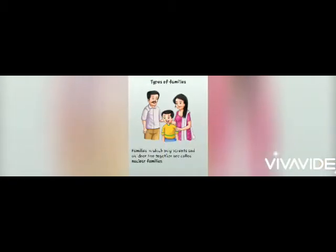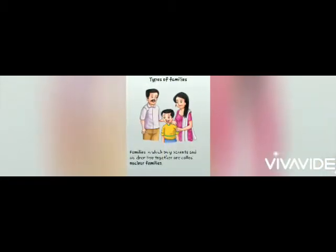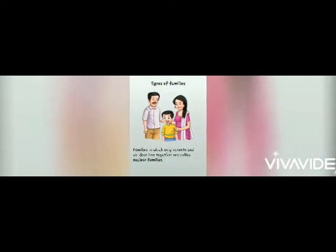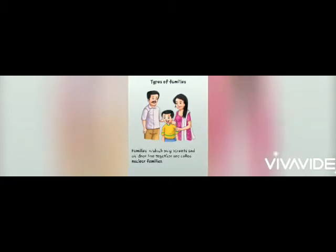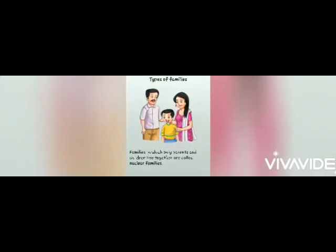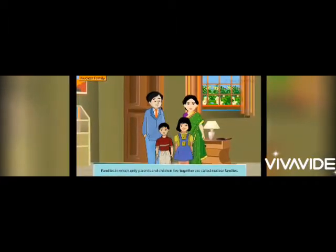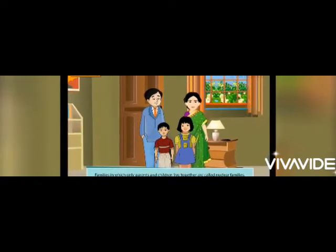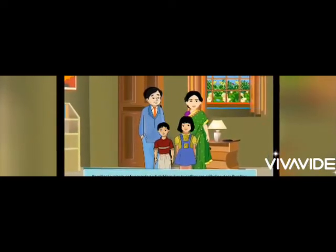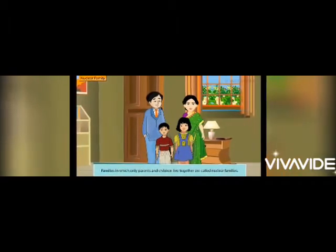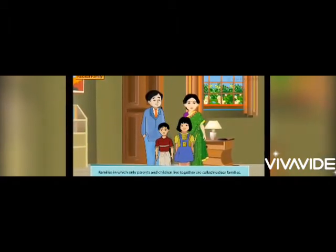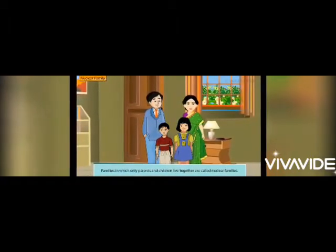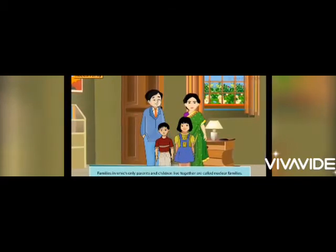The first one is nuclear family. Families in which only parents and children live together are called nuclear families. It means कि वो family जहाँ पे सिर्फ parents और बच्चे साथ में रहते हैं उसको हम लोग nuclear family बोलते हैं — जैसे पापा, मम्मी, भाई, बहन — बस ये लोग रहते हैं तो ये family nuclear family कहलाती है।